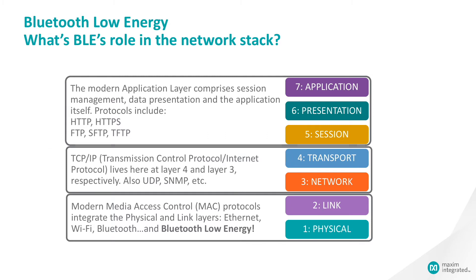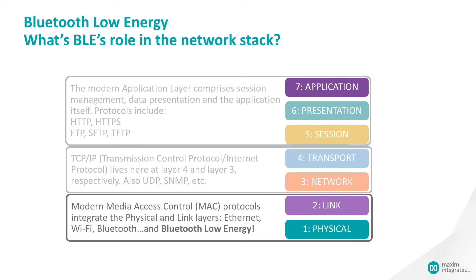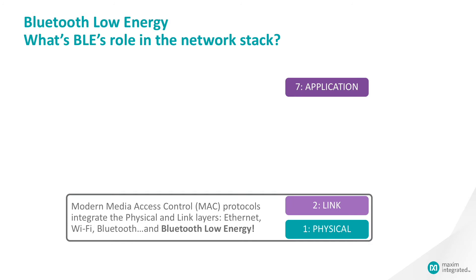At the bottom of the stack is the physical layer and the link layer, and this is where BLE lives. But most BLE applications don't actually talk to a network layer — they just pass the data directly to an application. You certainly can embed the output of the network layer down to a BLE link, or feed the output of the BLE link layer up to a network layer, but that's not how it's usually done. That's why BLE isn't really a network protocol — it's just a way to get information moved between two things that are in close proximity.